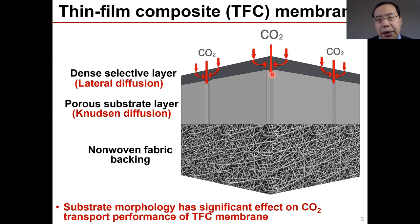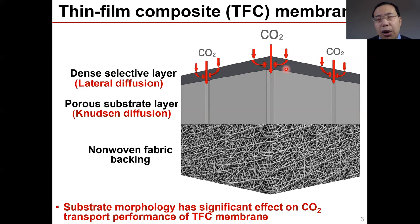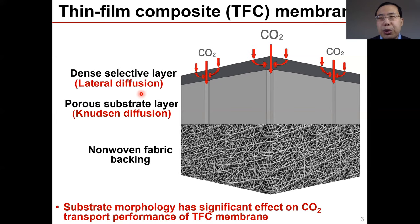However, as we know, the surface pore density of the substrate is limited in similar areas. After CO2 passes through the selective layer, if there is no pore underneath, CO2 has to move laterally in the selective layer to find a pore to pass through. This is so-called lateral diffusion, which increases the mass transfer resistance. Because of lateral diffusion and Knudsen diffusion, substrate morphology has a significant effect on CO2 transport performance of TFC membranes.